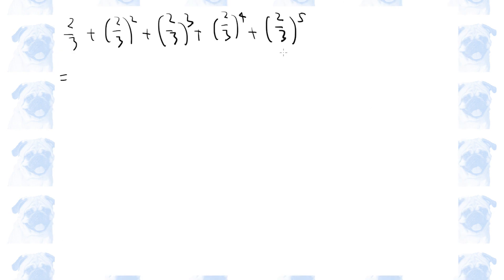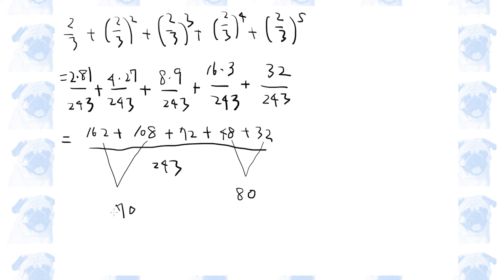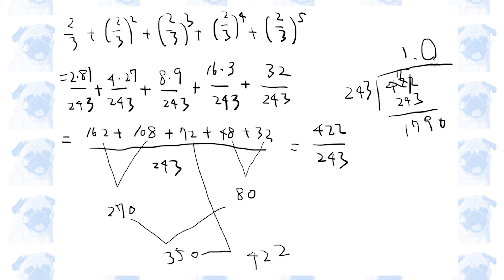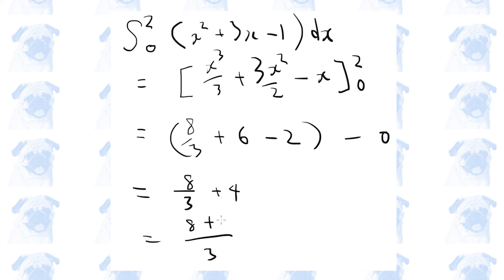Sine 30 degrees is 1 half. Cosine 45 degrees is root 2 over 2. Tangent 60 degrees is root 3. Root 2 is about 1.4 and root 3 is about 1.7. This is roughly 6 over 2, which is 3. 3 to the power of 5 is 243 and 2 to the power of 5 is 32. We only need to check if the digit is greater or less than 5 — it is definitely bigger than 5, and this is roughly equal to 2. 20 over 3 is roughly 7.